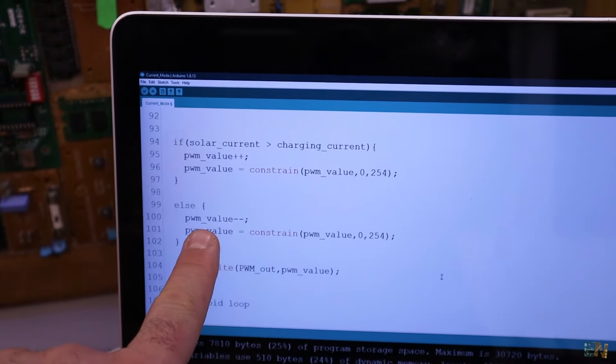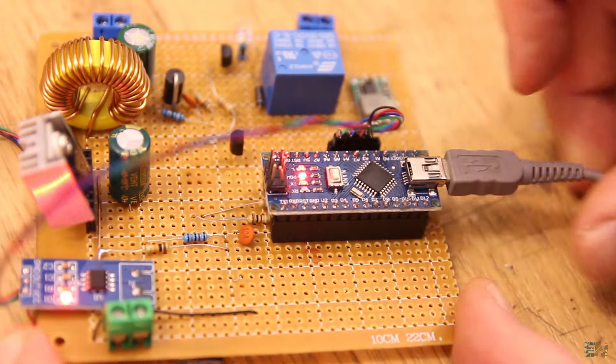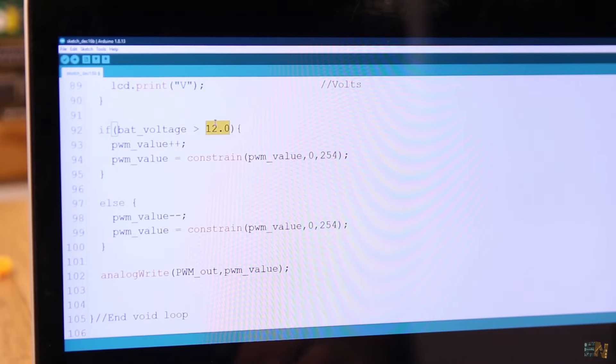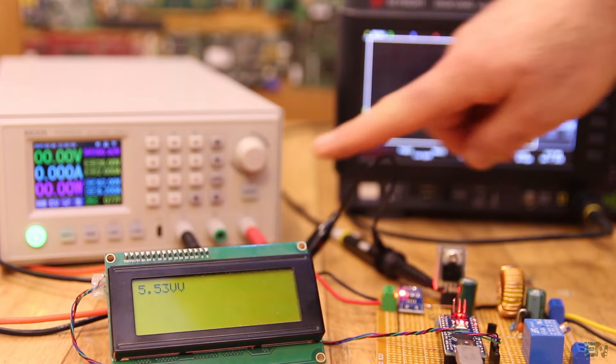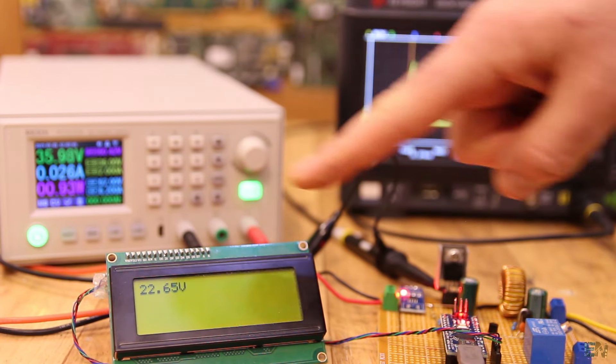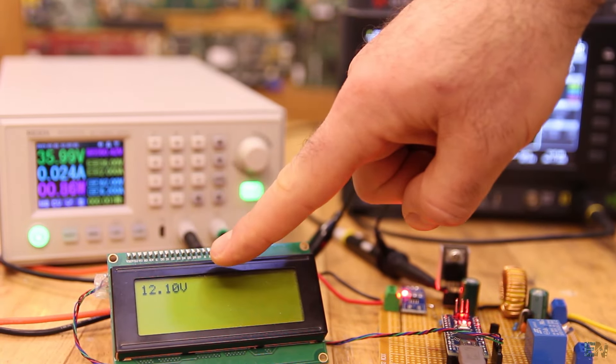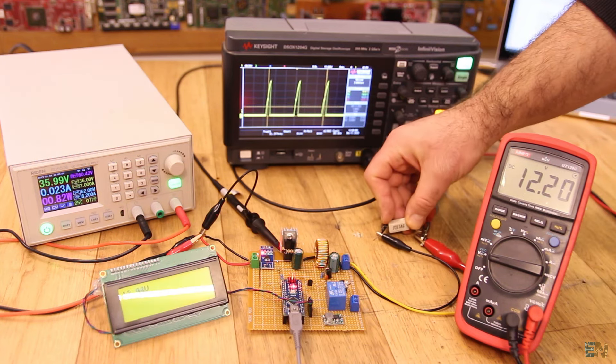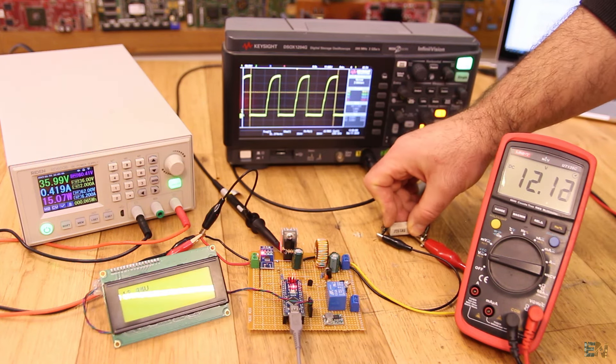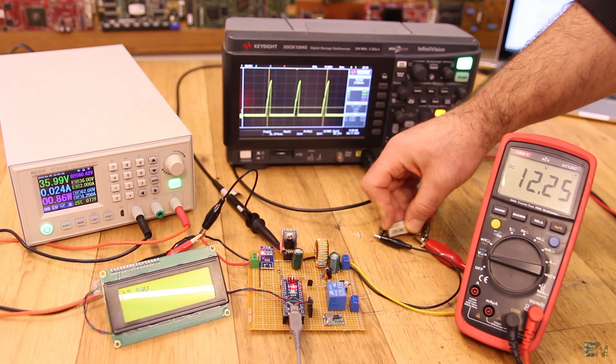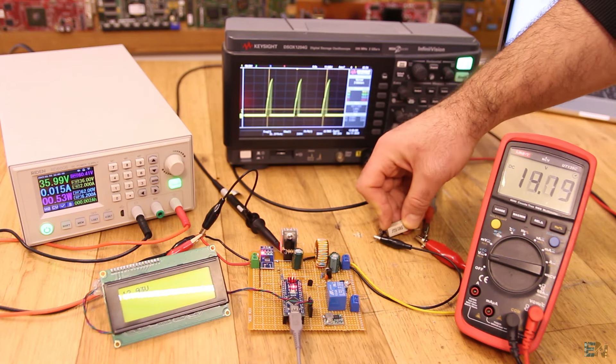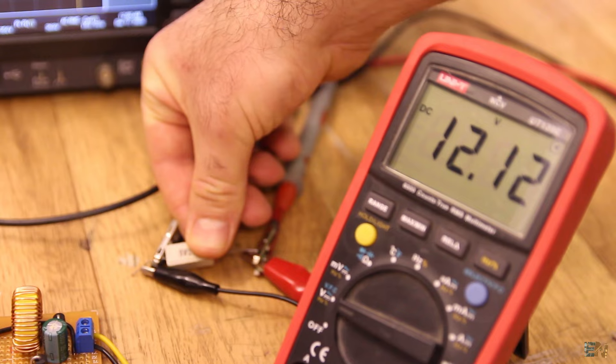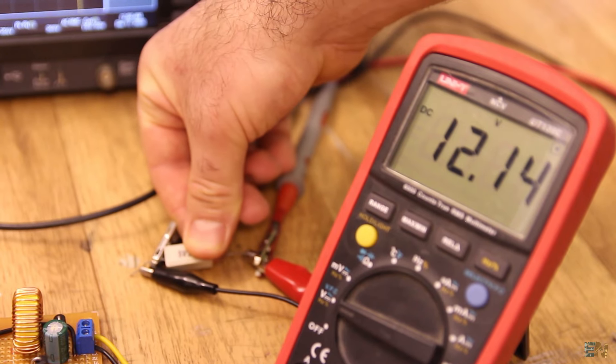Now I upload another code that will keep the voltage at the constant value. I set it to 12V. I connect 36V at the input but the voltage at the output is always 12V as you can see. Even if we add a load that will draw a lot of current, the voltage is still 12V. The only thing that will change is the PWM signal. That easy we can control the voltage and current just by changing the PWM duty cycle that is connected to the buck converter MOSFET.